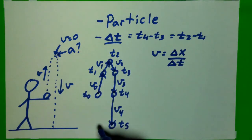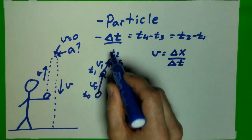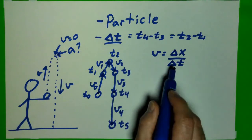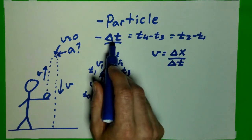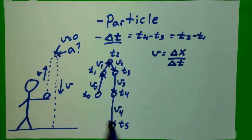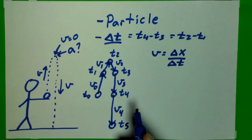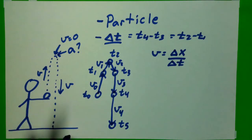And so, we call this a motion diagram where we draw the object at different locations separated by a uniform time step. And then, we start labeling the velocity vectors. And then, we will also add the acceleration vectors, which I'll wait for a different video.